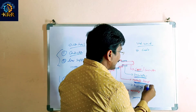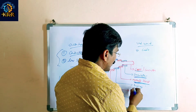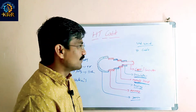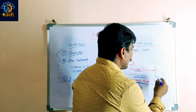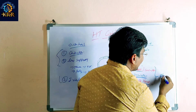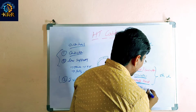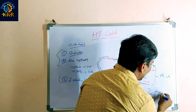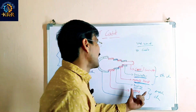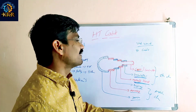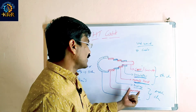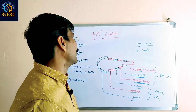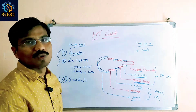The second one is the insulation. The third one is the metallic sheet. The fourth one is the bedding. The fifth one is the armouring. The sixth one is the servicing. The first three — core, insulation, and metallic sheet — are called electrical characteristics. The remaining three — bedding, armouring, and servicing — are called mechanical characteristics. We will discuss each one by one.